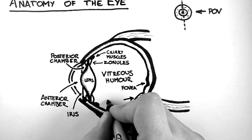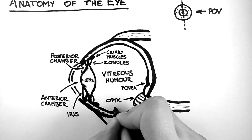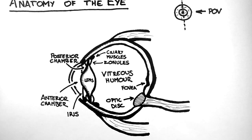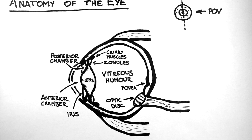At the back of the eyeball, we also have the optic disc. This is the point where all the nerves from the photoreceptors dive back through the retina and then onward to the brain through the optic nerve. The optic disc is responsible for the blind spot in our vision.